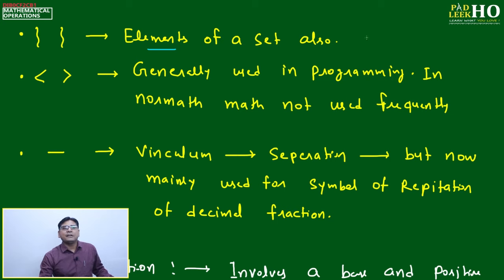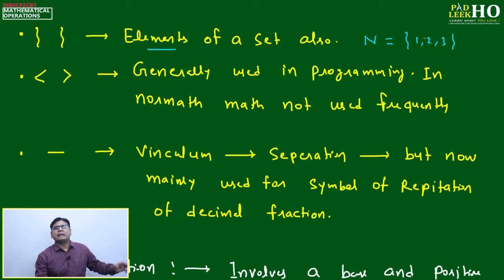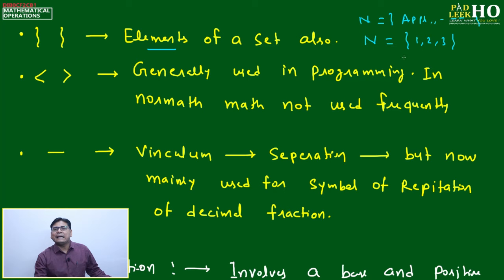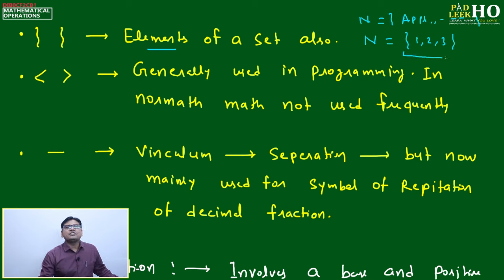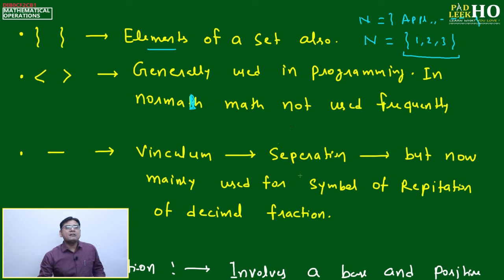Braces also represent elements of a set — for example, N = {1, 2, 3} means N is a set of three elements. Elements can be numbers, variable names, fruit names, animal names, or anything. This is the representation of a set using braces, apart from their use in mathematical operations. The angle bracket is mainly used in programming and not much in normal math. The bar is mainly now used as a symbol of repetition for decimal fractions.